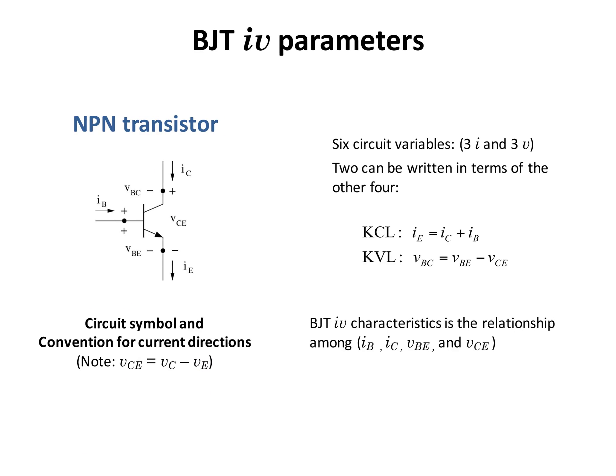BJTs have six circuit variables: three current variables and three voltage variables. Using Kirchhoff's current law and Kirchhoff's voltage law, we can write two of them in terms of four other parameters. We have I_base, I_collector, and I_emitter. Using KCL, we can write I_E equals I_C plus I_B — I_base and I_collector enter the device and I_E leaves the device. KVL tells us that V_BC equals V_BE minus V_CE.